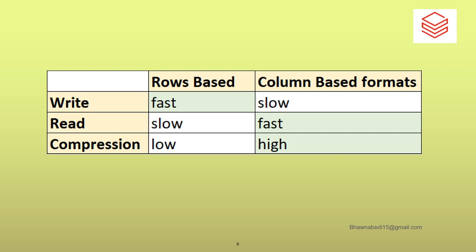For reads: reads are slower in the row-based format because it has to read all of the rows. In column-based formats, reads are fast. For compression: row-based and column-based file formats like Avro and ORC have default compression, which is why they are much better than normal text or JSON files — they compress the data when storing it. Row-based formats have a lower compression level; column-based formats have a higher compression level. That is why Parquet and Avro are more widely used — they compress data for less storage.